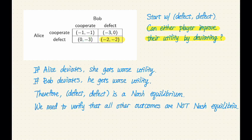We can use our chain of best response argument. So let's suppose we start with cooperate, cooperate. If we start with both cooperating, then can either player improve their utility by deviating?